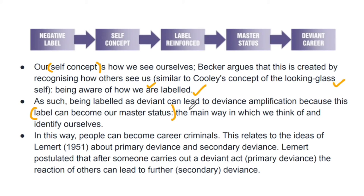What happens is that the label given to us becomes our master status. For example, if I am a very good person with many good qualities, but I have been labeled as a terrorist — no matter how good I am, if I have been labeled a terrorist, society will always see me that way. They will always say 'she is a terrorist.' So terrorist becomes my master status — the main way in which I think of and identify myself — automatically. In this way, people can become career criminals, meaning their entire identity becomes that they are a criminal.